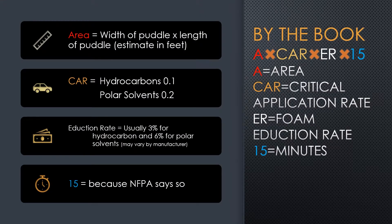The by-the-book method is: area times critical application rate times reduction rate times 15. Area is easy — it's just your length times your width. I don't care if it's a circle or if it's square or all oblong. Figure out how wide it is at its widest, how long it is at its longest, multiply those two numbers together, and you get your area. So if it's 20 foot long by 10 foot wide, that's 20 times 10 — it's 200 square feet.